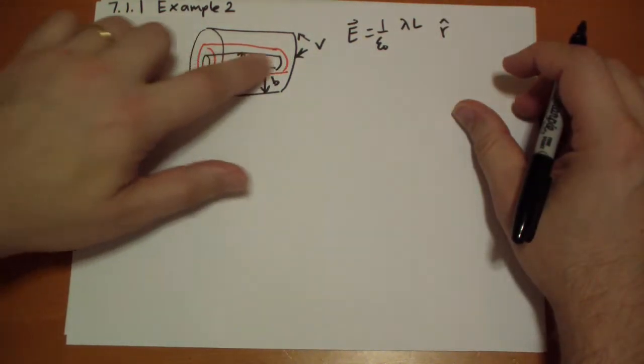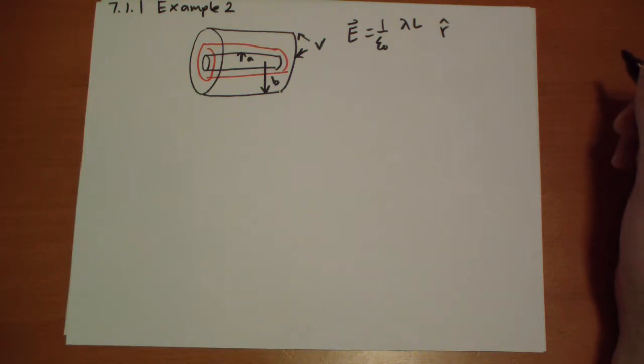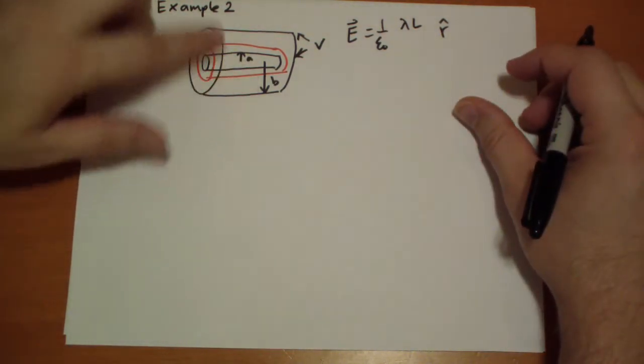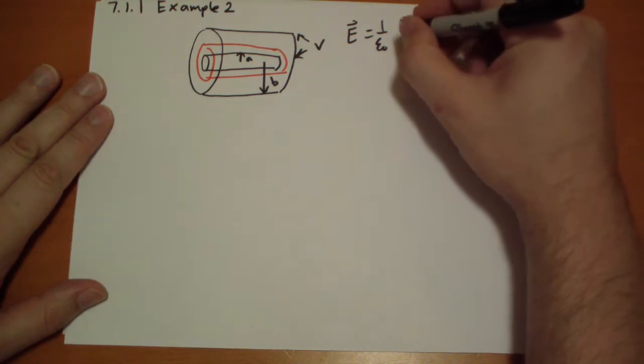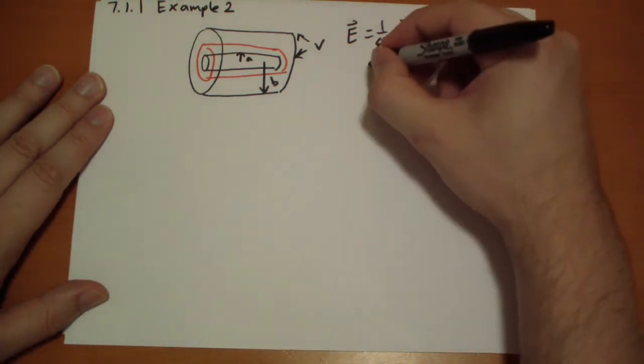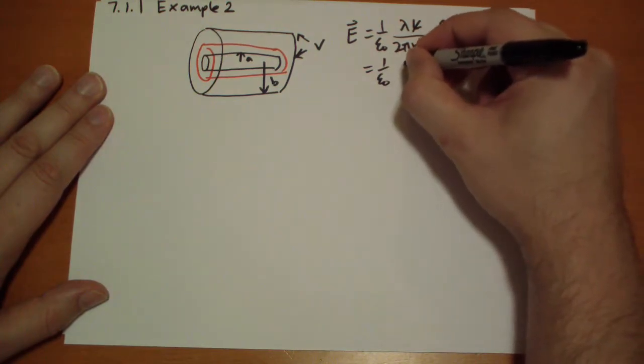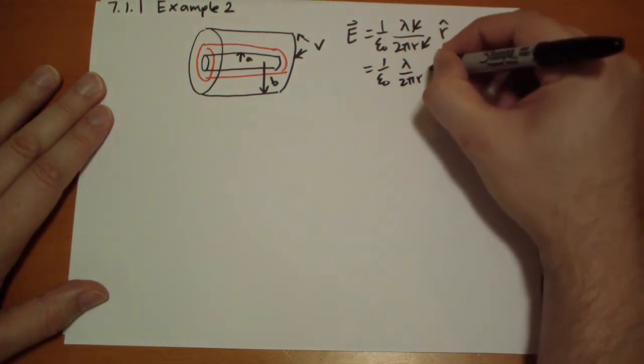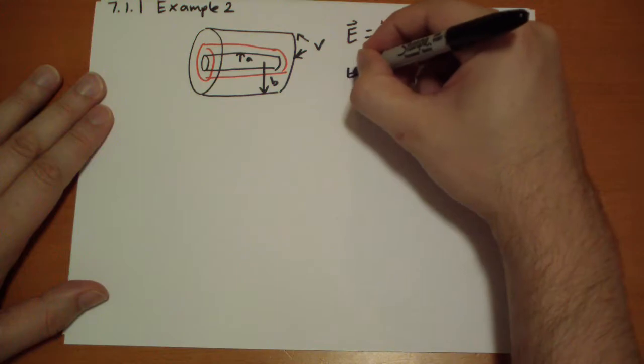Divided by the area, the wrap-around area. So that's going to be 2πRL. And obviously the L's cancel. So you just get this nice little equation in the r-hat direction.